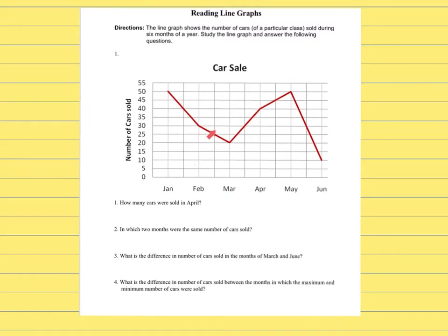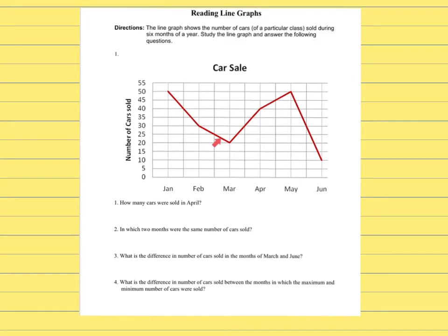By looking at your graph — and I'm just analyzing, not answering any questions yet — from January all the way through March, what happened to the sales? They went down. The number of cars sold went down.